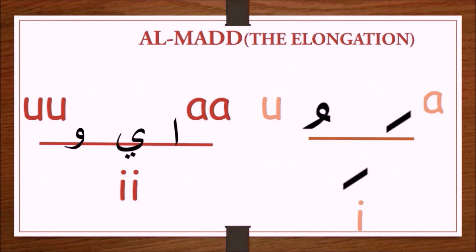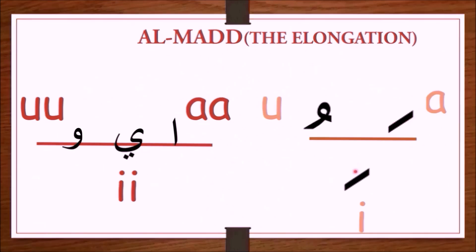In the first lecture, I explained to you how each of the short vowels — Fatah, Kesro, and Domma — give each of the letters the A, E, and U sounds.